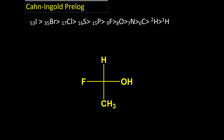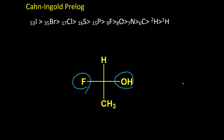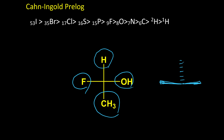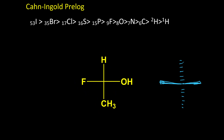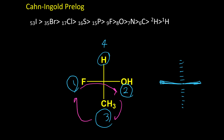We can also easily use this method for finding configuration in Fischer projection form as well. Based on the definition of Fischer projection, these two bonds on the left and right are always in the front of the molecule, and the vertical bonds are always in the back. So we either have number four in the front or back, and we can easily find the configuration. In this example, fluorine is number one, oxygen is number two, and carbon is number three. Number four is in its right place — in the back of the molecule. From one to two to three, it is clockwise, and because four is in the right place, configuration is R.